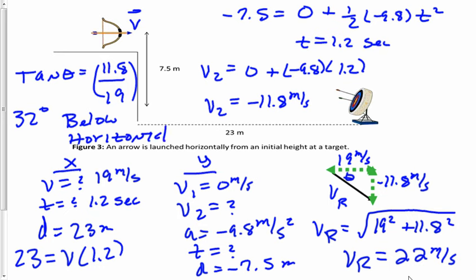So the velocity vector is 22 meters per second at 32 degrees below the horizontal.